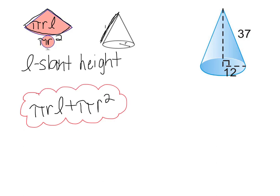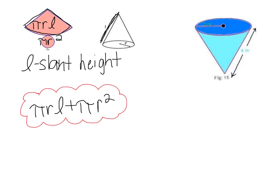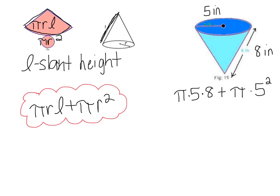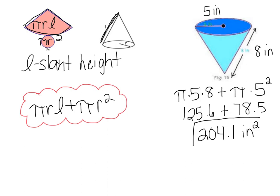Now we're going to apply that to the picture shown. We have a cone where the radius is 5 inches and the slant height is 8 inches. Plugging those in: π times 5 times 8, plus π times 5 squared. Five squared is 25 times π, which equals 78.5. Then 5 times 8 is 40, times 3.14 for π, equals 125.6. Adding 78.5 gives us 204.1 inches squared for the surface area of the cone.